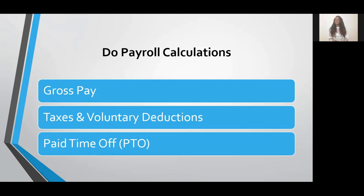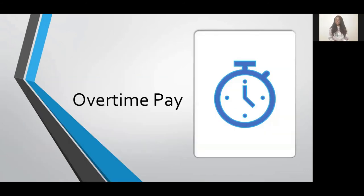You'll need to check your state laws — federal law doesn't require you to offer vacation or sick pay, but in states like California you are required to offer some sick pay. Now let's talk about overtime pay, because it goes into the gross pay amount. Overtime pay is for any work over 40 hours in the work week, typically paid at 1.5 times the regular rate per federal law. So if an employee earns $10 an hour and works overtime, they'll be paid $15 an hour for those overtime hours.